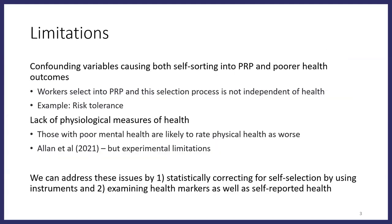There are gaps in the current literature. One is that people who work in PRP are a self-selected sample — they may have specific unobservable characteristics, such as greater risk tolerance, which also affect their health. A second issue is that most data relies on self-reported health measures with a lack of physiological measures. If someone is already struggling with mental health, they may also rate their physical health as worse. We did run an experiment finding that those in PRP have higher cortisol levels, but it was a small homogeneous group and only captured acute, not chronic, stress.